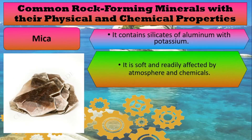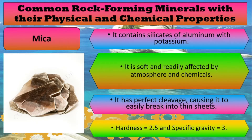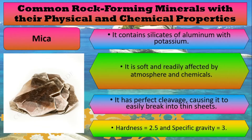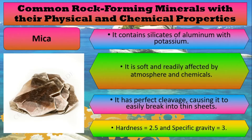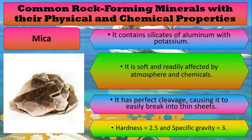Last, we have mica. Mica contains silicates of aluminum with potassium. It is soft and readily affected by atmosphere and chemicals. It has a perfect cleavage, causing it to easily break into thin sheets. Mica's hardness is 2.5 and it has a specific gravity of 3.